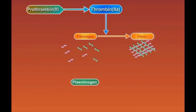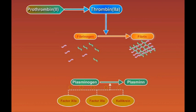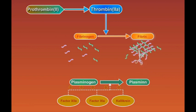Activation of the fibrinolytic pathway starts by the enzymatic conversion of plasminogen to plasmin by the action of plasminogen activators, which are factor 12a, factor 11a, and calicrin. Plasmin mediates fibrinolysis via degradation of cross-linked fibrin, thereby limiting clot growth.